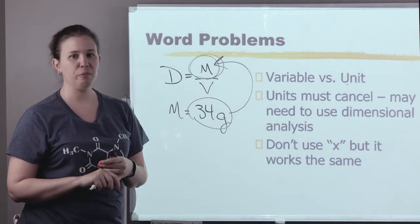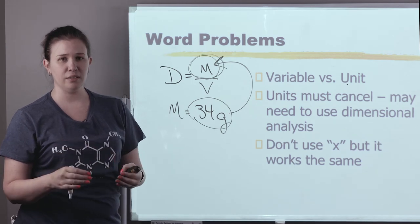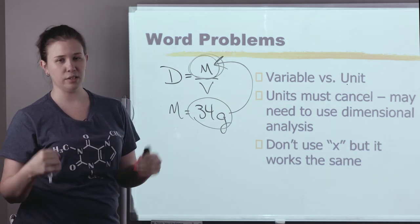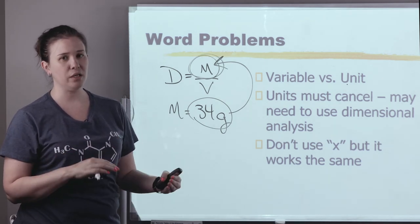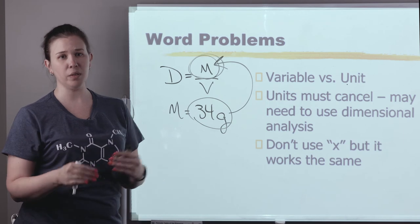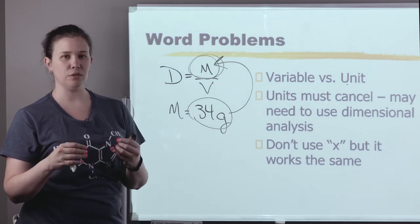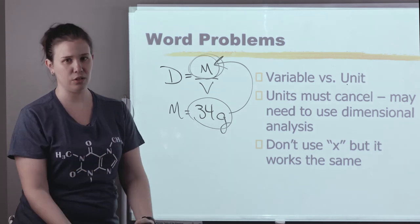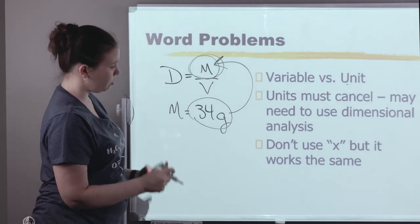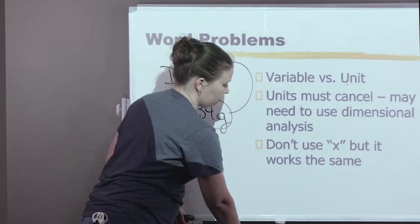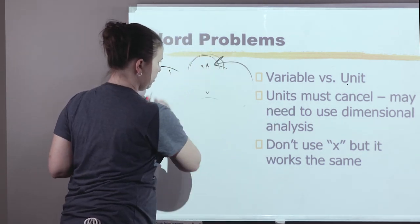One piece of advice up front: don't use x as your unknown. If the variable is P, keep it as P — that's going to help you make sure it actually means pressure and you're getting units for pressure. So don't use x, but it is still kind of going to be a lot of solving for x.